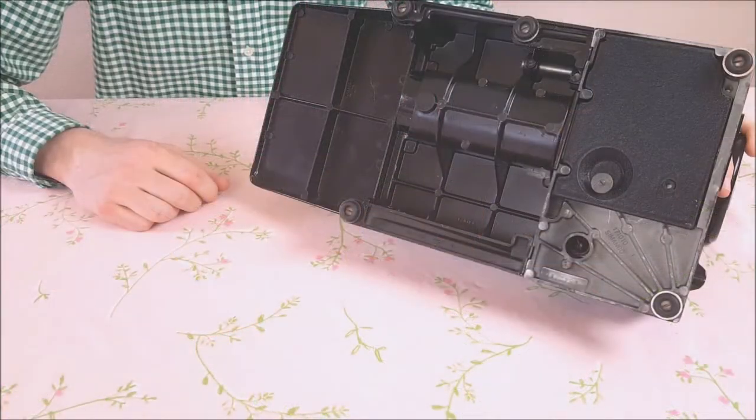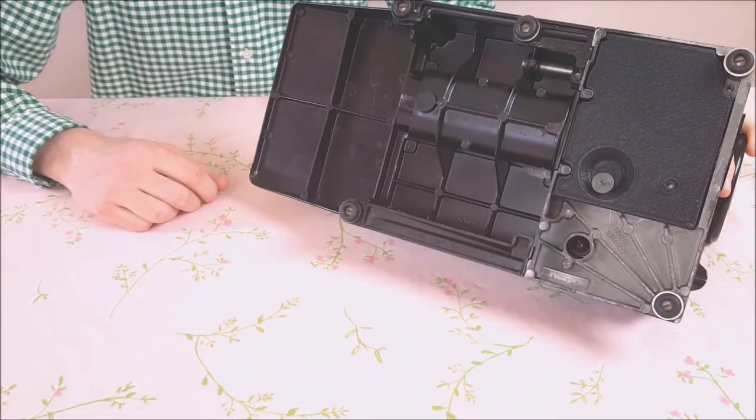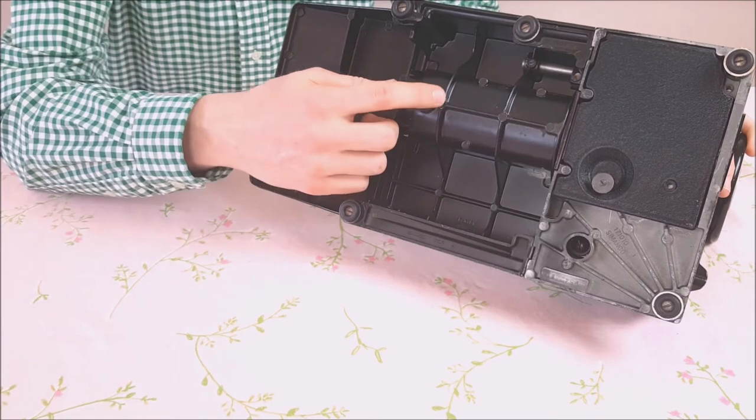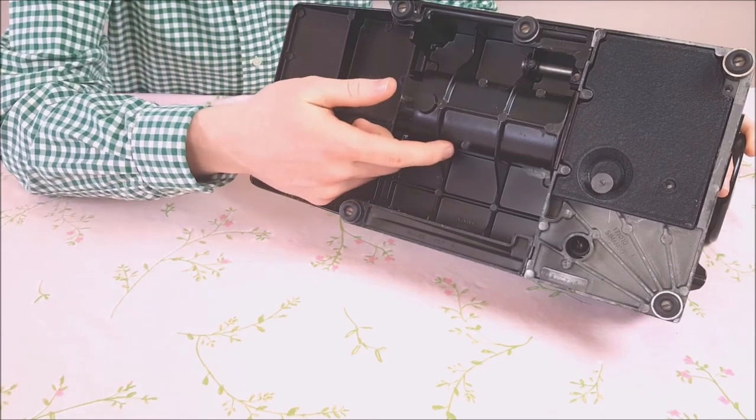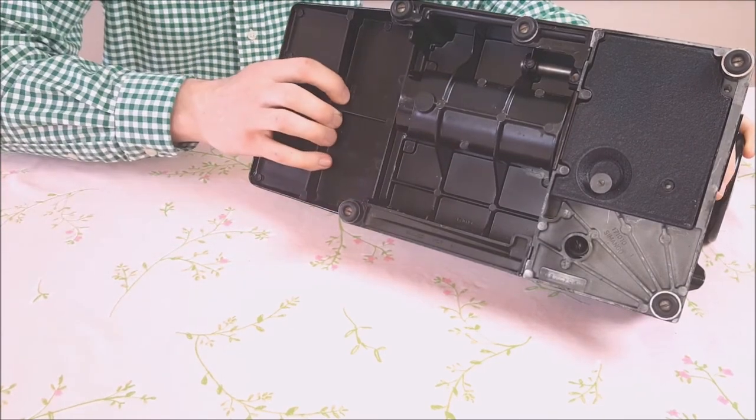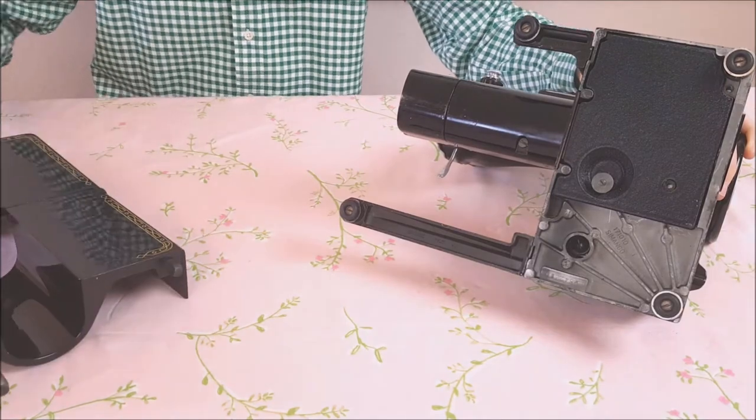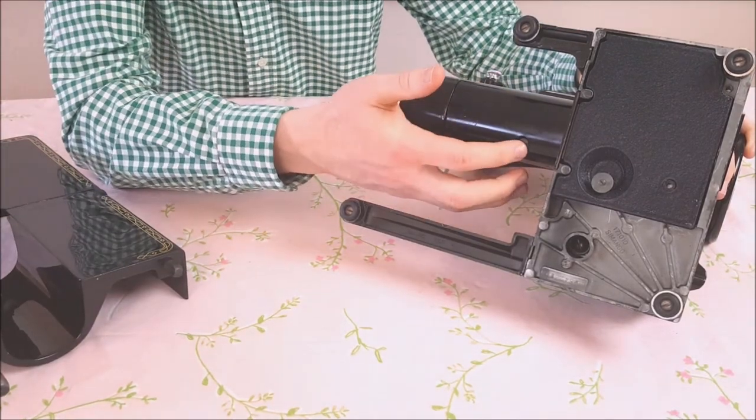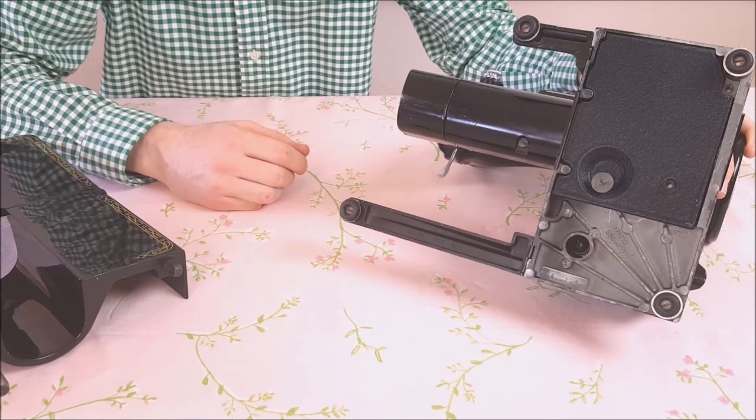There's one last thing I want to show you. On the underneath side of the machine you can see this portion of the bed extension here and it covers up the free arm. When it's off you'll be able to see this screw. This screw is only accessible with the bed extension off.